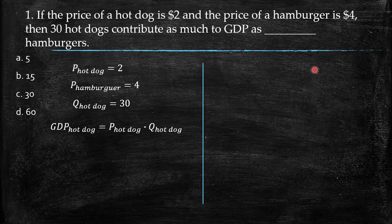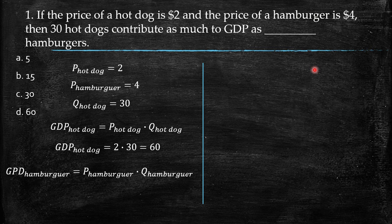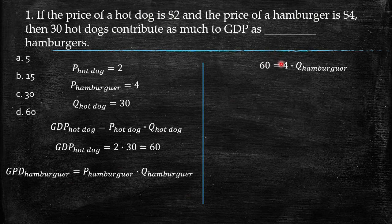The GDP for hot dogs equals price of hot dog times quantity of hot dogs. The GDP for hamburgers equals price of hamburger times quantity of hamburgers. So GDP for hot dogs is two times 30, which gives us 60. Now we want to find the quantity of hamburgers that produces the same GDP of 60.